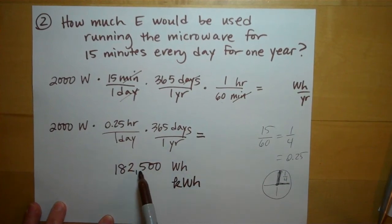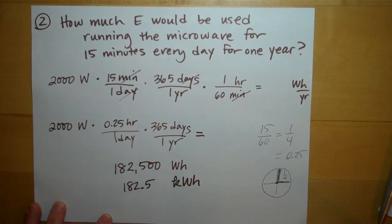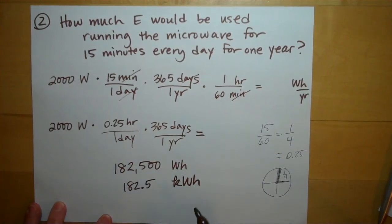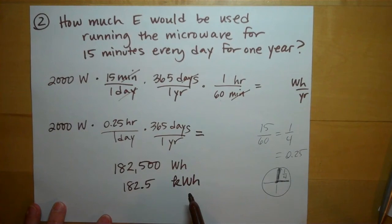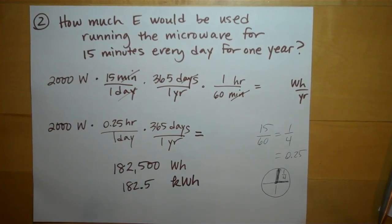Again, we really should report this in kilowatt-hours, so I'll move the decimal three places, 182.5 kilowatt-hours. This is how much energy it took to run this microwave for 15 minutes every day for a year.